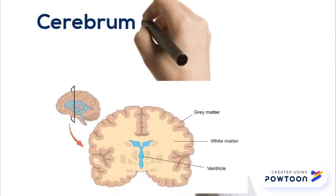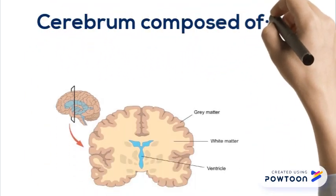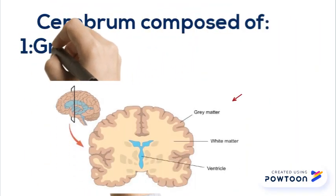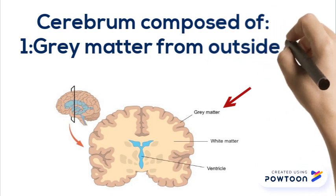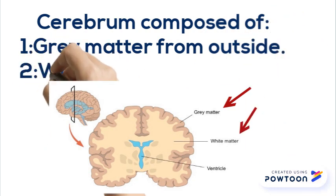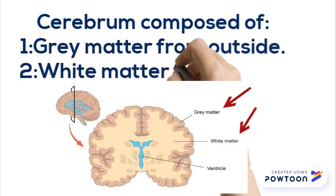Our cerebrum is composed of grey matter from the outside and white matter from the inside.